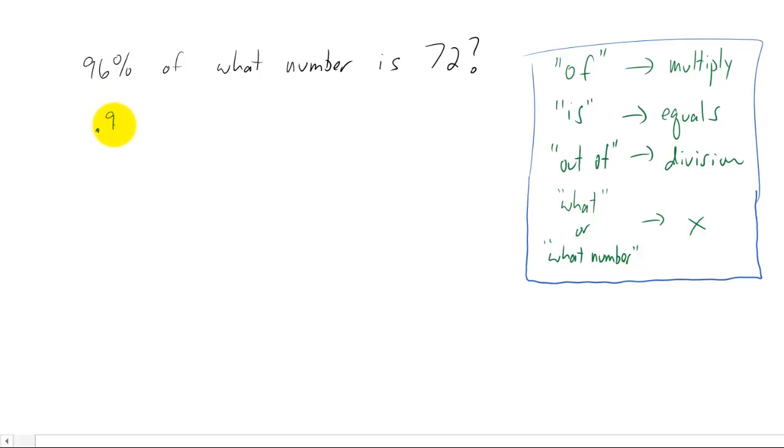96%, we're going to write that as a decimal. .96, 'of' is multiplication. 'What number' is going to be an x. 'Is' is going to be an equal sign. 72. So now we've taken this question and we've converted it into an equation that we can solve.